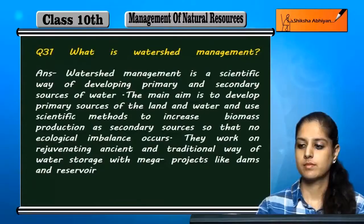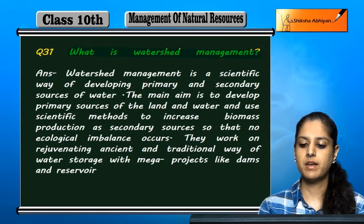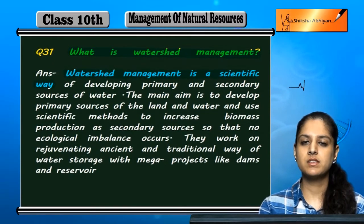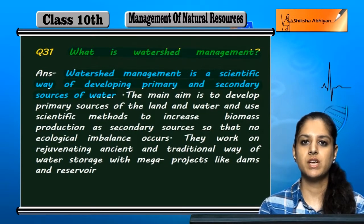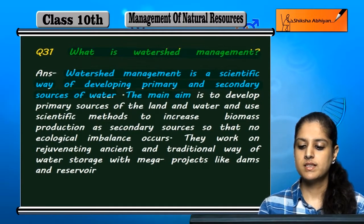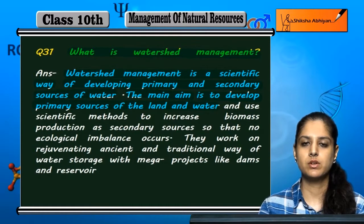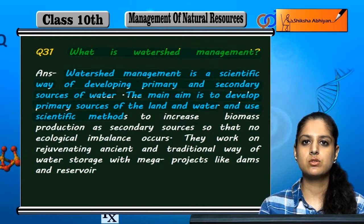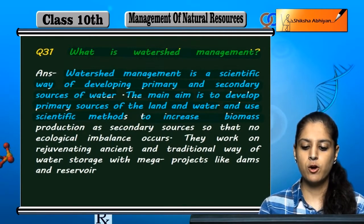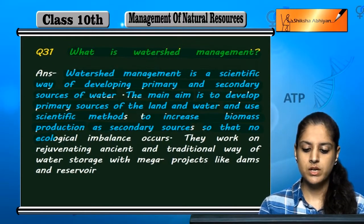Question number 31: What is watershed management? Watershed management ek scientific tarika hai jis se primary aur secondary water ke sources ko create aur develop kar sakte hain. Iska main aim hai primary sources of land and water ko develop karna hai, using scientific methods.